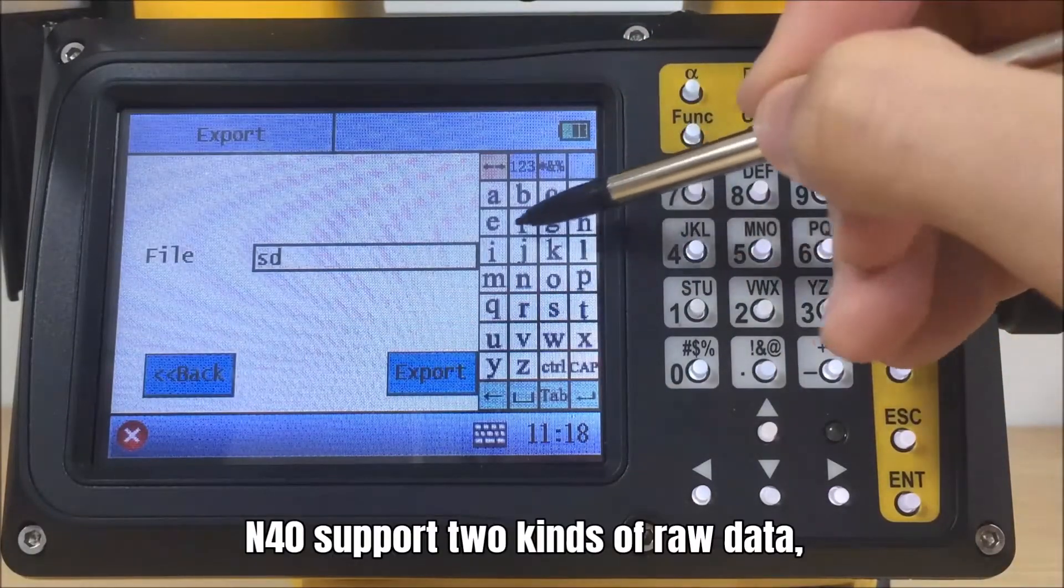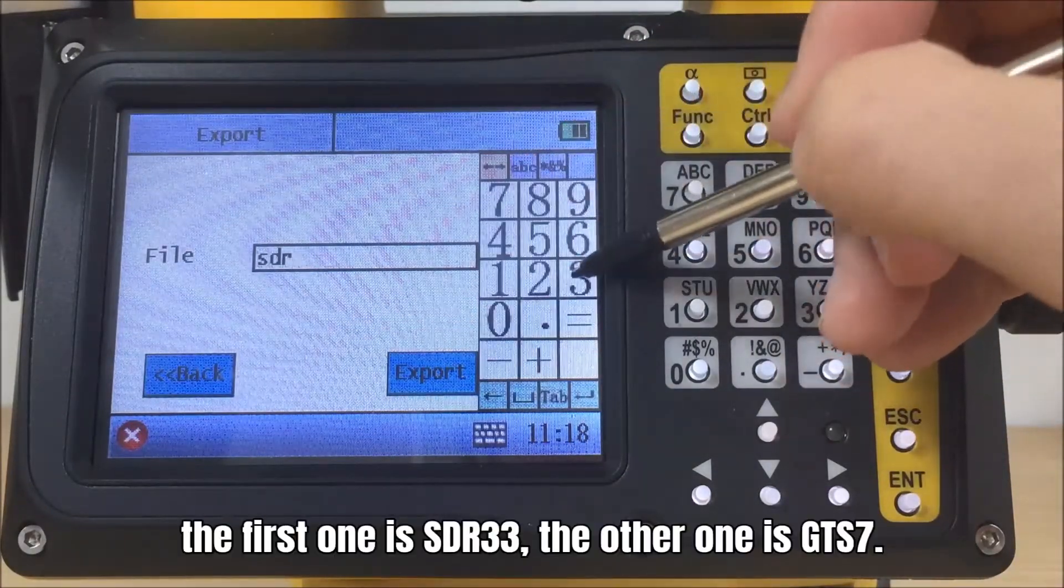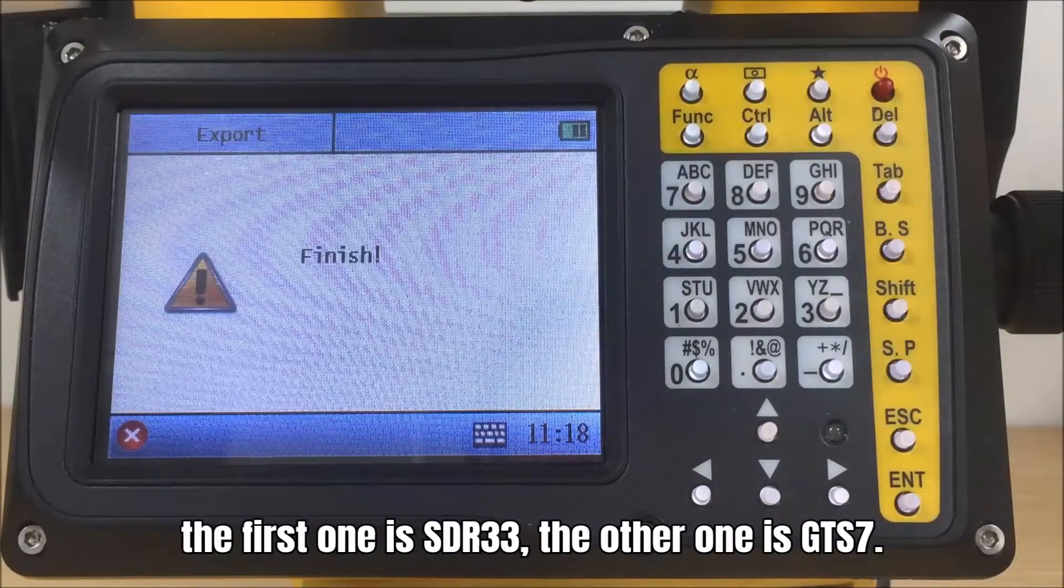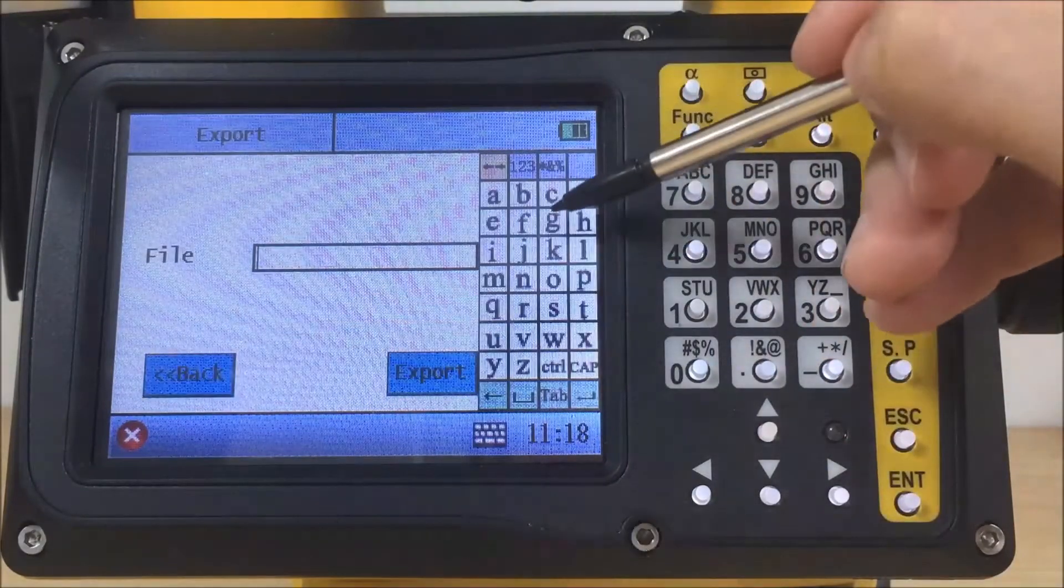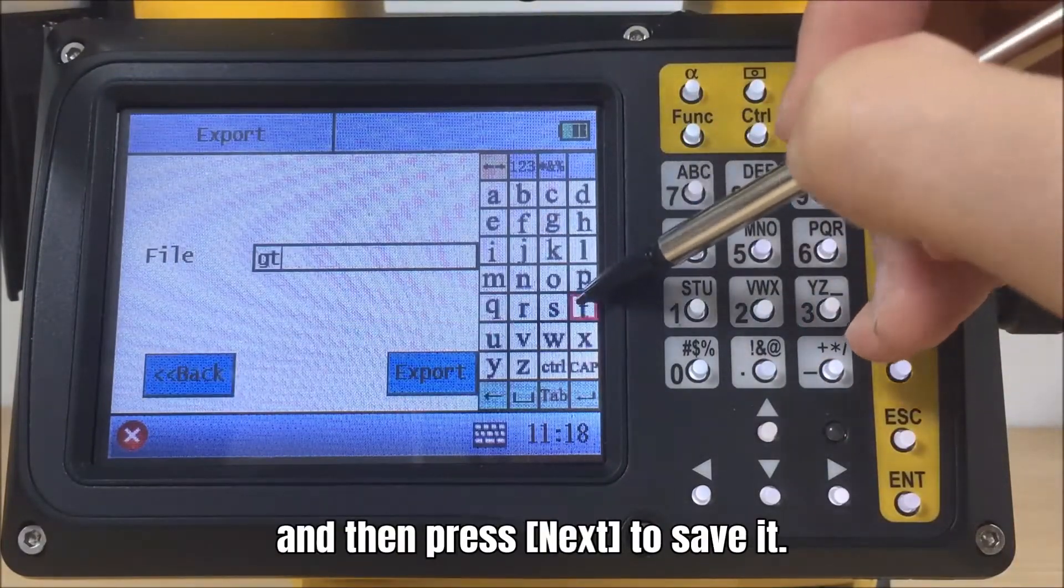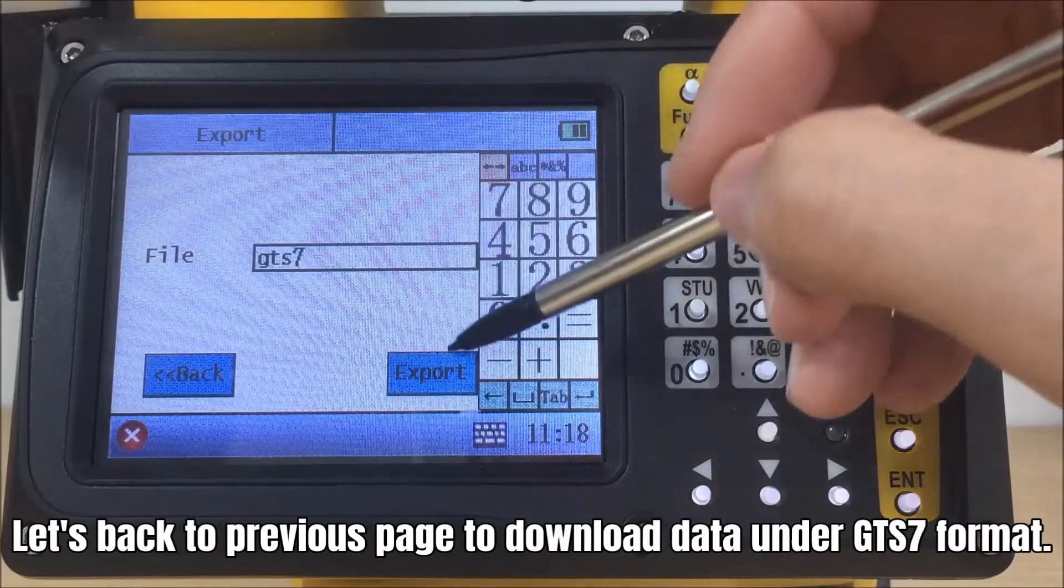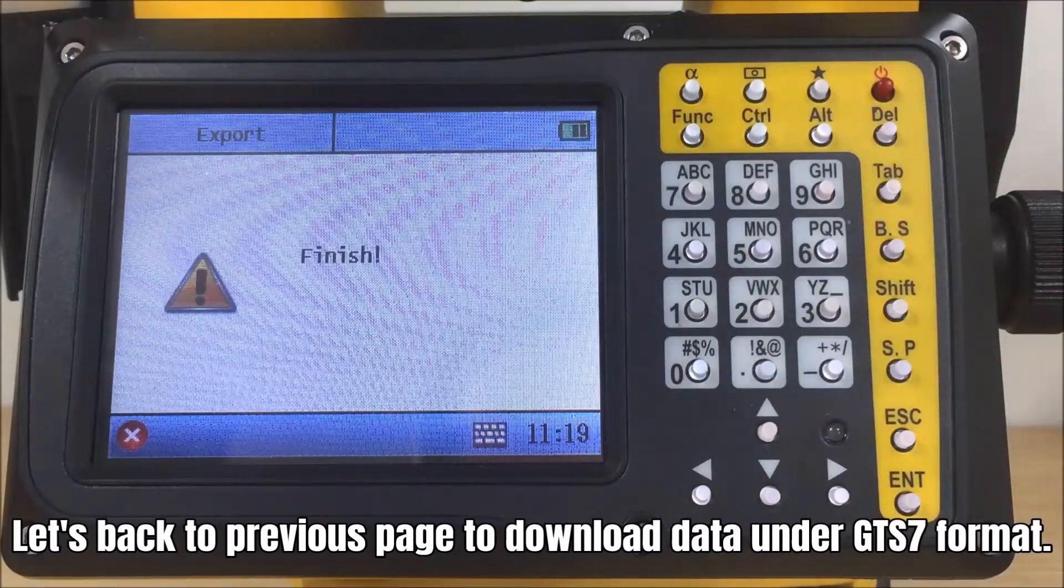N40 supports two kinds of raw data: the first one is SDR33, the other one is GTS7. Select the format of SDR33 and then press next to save it. Let's go back to previous page to download the raw data under GTS7 format.